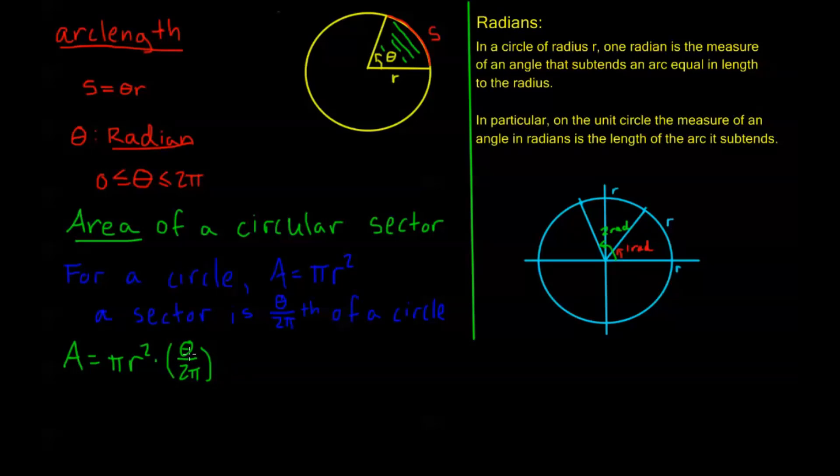This is the portion of the circle that I'm concerned with. This is my sector. So, I get a cancellation here in the pi's, and we have this new formula. The area of a circular sector is one half theta r squared.